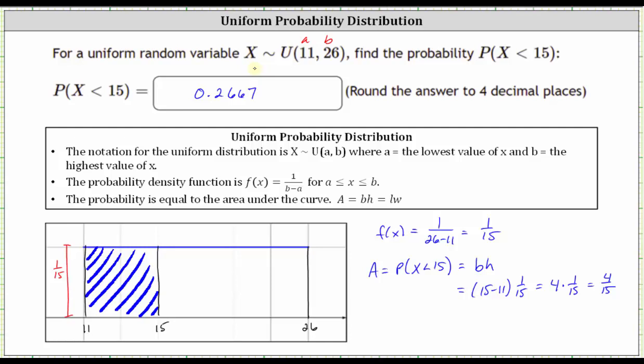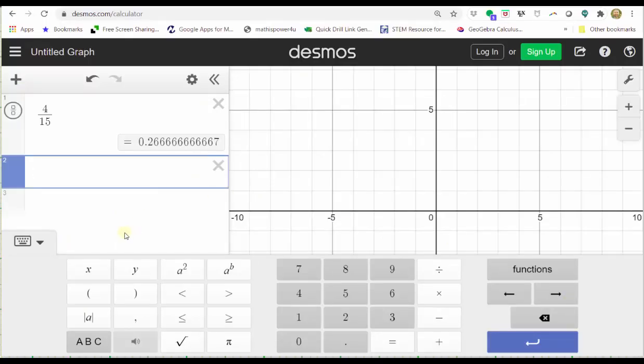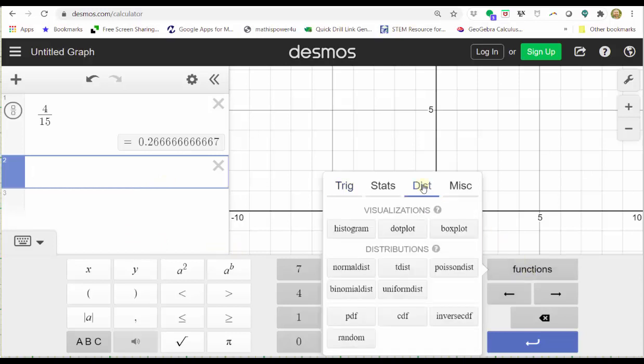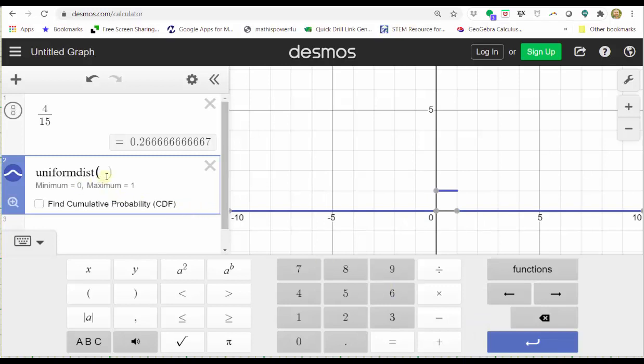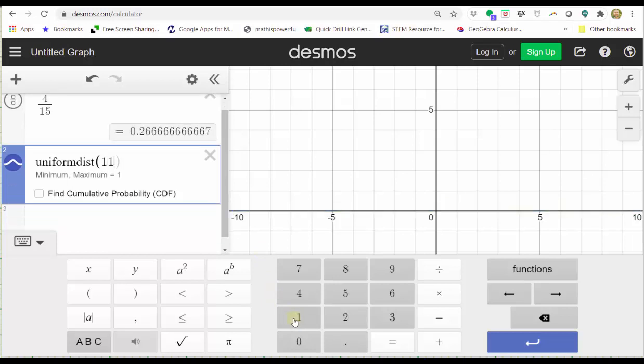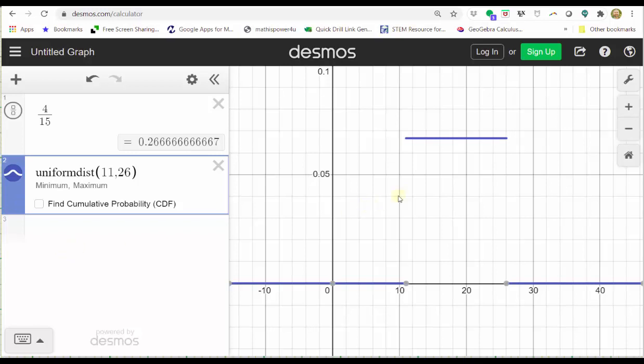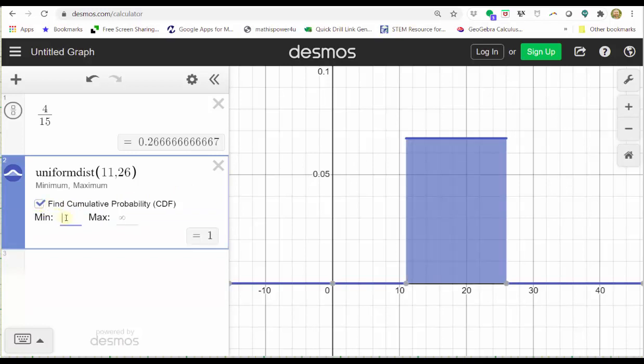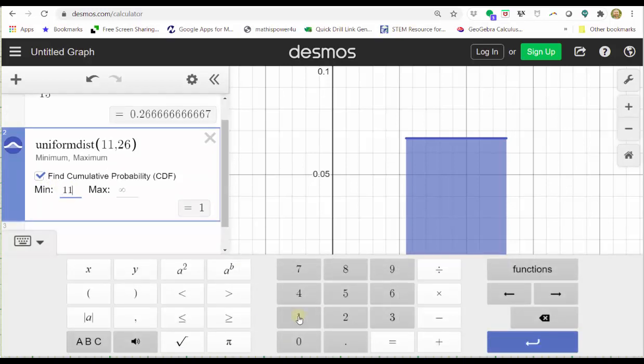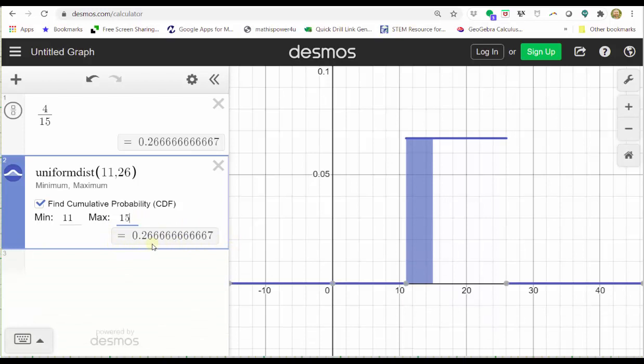Let's verify this result by graphing the uniform distribution on Desmos. Click Functions, then the Distributions tab, then Uniform Distribution. We enter the min comma max: 11, 26. Close the Desmos keypad and click Zoom Fit. Notice we have a nice graph of the uniform distribution on the right. To find the probability that X is less than 15, click the Find Cumulative Probability box. Change the min to 11 and the max to 15. Close the Desmos keypad. Notice below we get the same result, 0.2667, and on the right, we have the area of the rectangle that represents the probability. I hope you found this helpful.